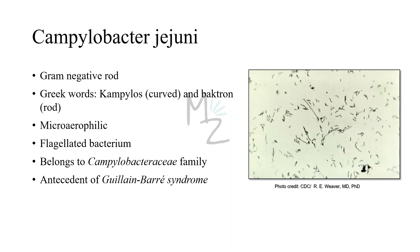Campylobacter jejuni is a gram-negative rod. It has got two words in it — both are Greek words. The first one is 'Campylo', from Greek 'Campylos', meaning curved, and the second one 'Bacter', from Greek 'Bacteron', meaning rod. So this bacterium is curved and rod-shaped. Campylobacter jejuni is microaerophilic — it grows best in 5% oxygen rather than the 20% in the atmosphere. It is a flagellated bacterium, which makes it motile. It belongs to the Campylobacteraceae family and is the antecedent of Guillain-Barré syndrome.